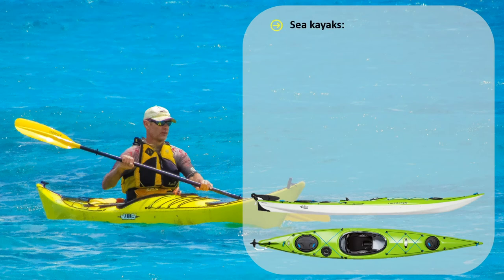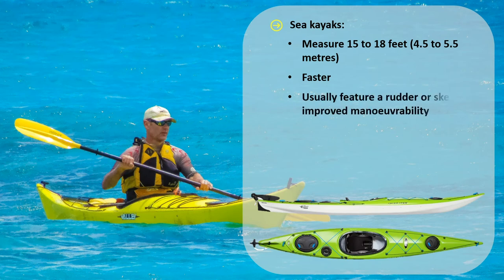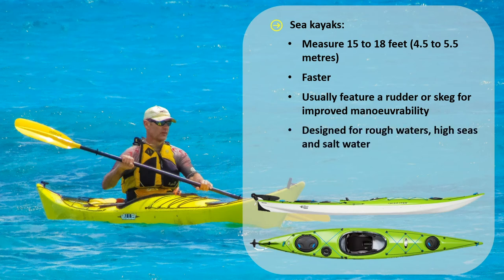Sea kayaks measure 15 to 18 feet long, or 4.5 to 5.5 meters. Their length makes them faster, but since they are used in water that is often turbulent, they usually feature a rudder or skeg for improved maneuverability. These kayaks are designed for rough waters, high seas, and salt water.